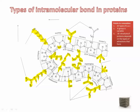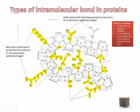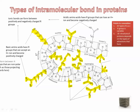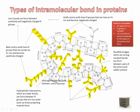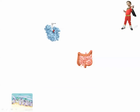Acidic R groups can lose an H and become negatively charged, while amino groups can gain an extra H and become positively charged — forming ionic bonds between them. Hydrophobic interactions occur between nonpolar groups, which you can recognize by seeing only carbons and hydrogens with no oxygen or nitrogen. Disulfide bridges form between two cysteine amino acids, and hydrogen bonds also help hold the whole three-dimensional structure together.